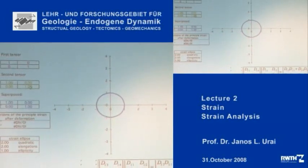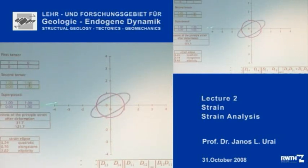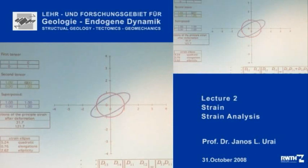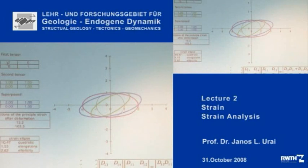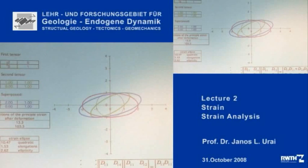Let me deform this by a shear — we have seen it before. Now this is the second tensor. And if I make the first tensor like that, then the first deformation is this pink one, the second deformation is this one, and the final deformation is like this. I have programmed for you the equations to calculate the long axis of the ellipse and so forth — they are all listed in the appendix of Ramsey and Huber. Very simple and very easy to look up.